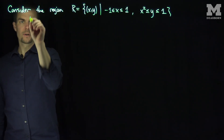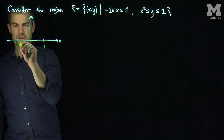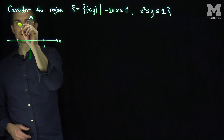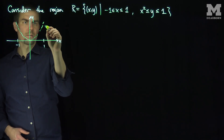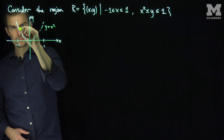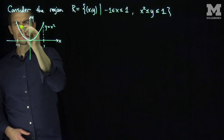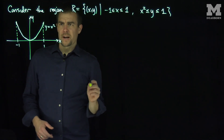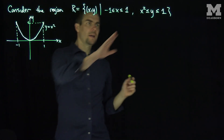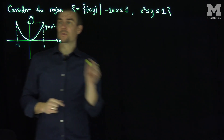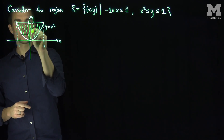This region R looks like this. My x is between 1 and negative 1, and my y is between this parabola — let's draw that parabola — that's the parabola y equals x squared. When I plug in either 1 or negative 1 to this parabola y equals x squared, we get to the point 1. So y starts on this parabola and goes up to y equals 1, which is this straight line. So region R is the region inside this parabola.